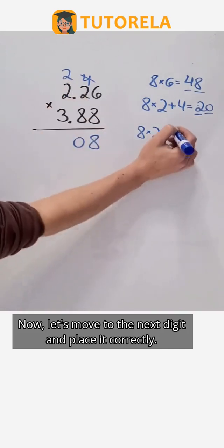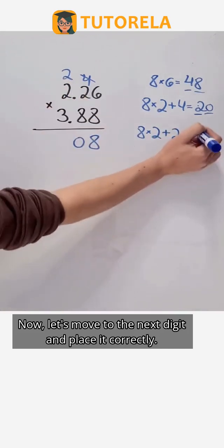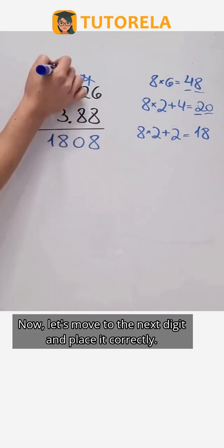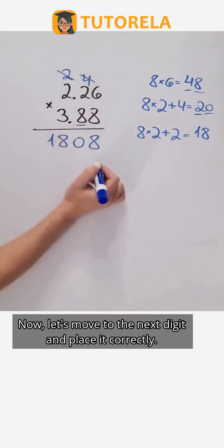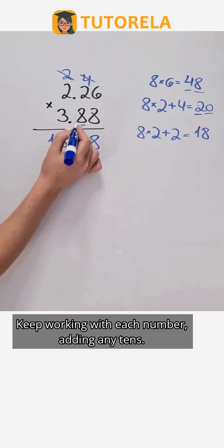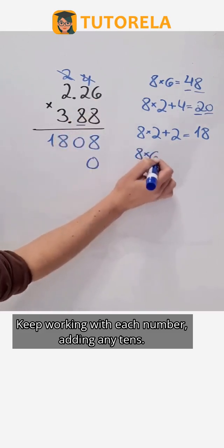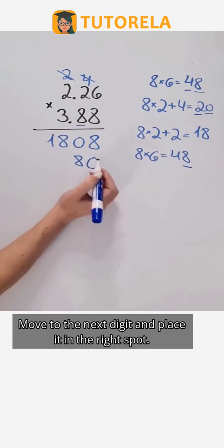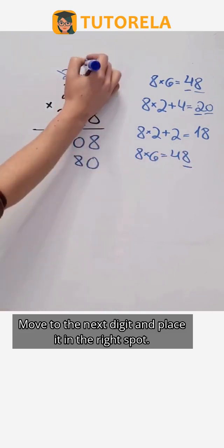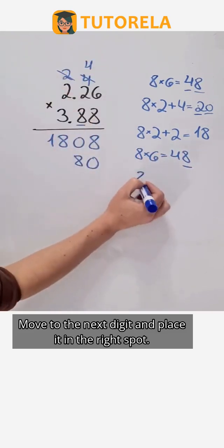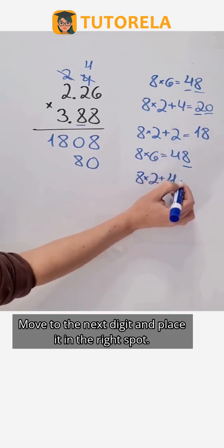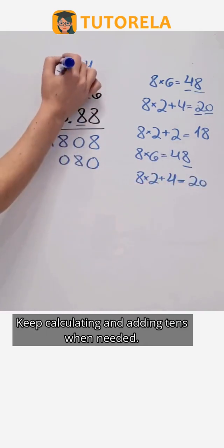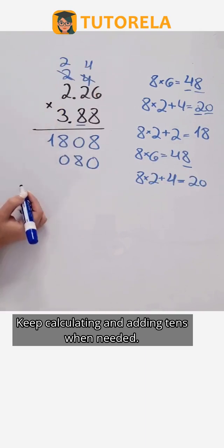Now let's move to the next digit and place it correctly. Keep working with each number, adding any tens. Move to the next digit and place it in the right spot. Keep calculating and adding tens when needed.